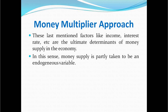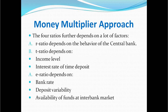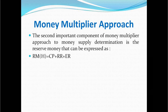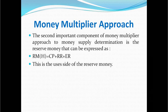Since money supply depends on variables like income and interest rate, it is said to be partly an endogenous variable. In the money multiplier approach, the second important component is reserve money, which can be expressed as cash held by non-bank public plus required reserve at the central bank plus excess reserves kept by commercial banks. This is the user-side definition of reserve money.